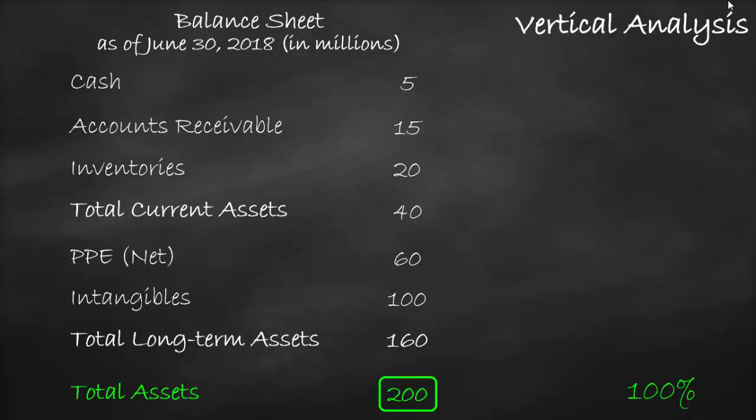We have the asset side as an example. To get a vertical analysis of cash, we divide cash of $5 million by assets of $200 million, which is equal to 2.5%.